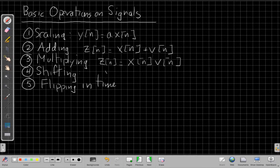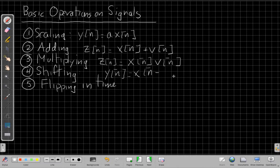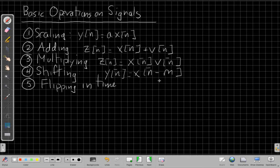In terms of shifting, my new signal, y[n], could be equal to x[n minus some shift m]. And we'll see this can be, depending on whether m is positive or negative, this could go left or right. And we'll get some practice with that.